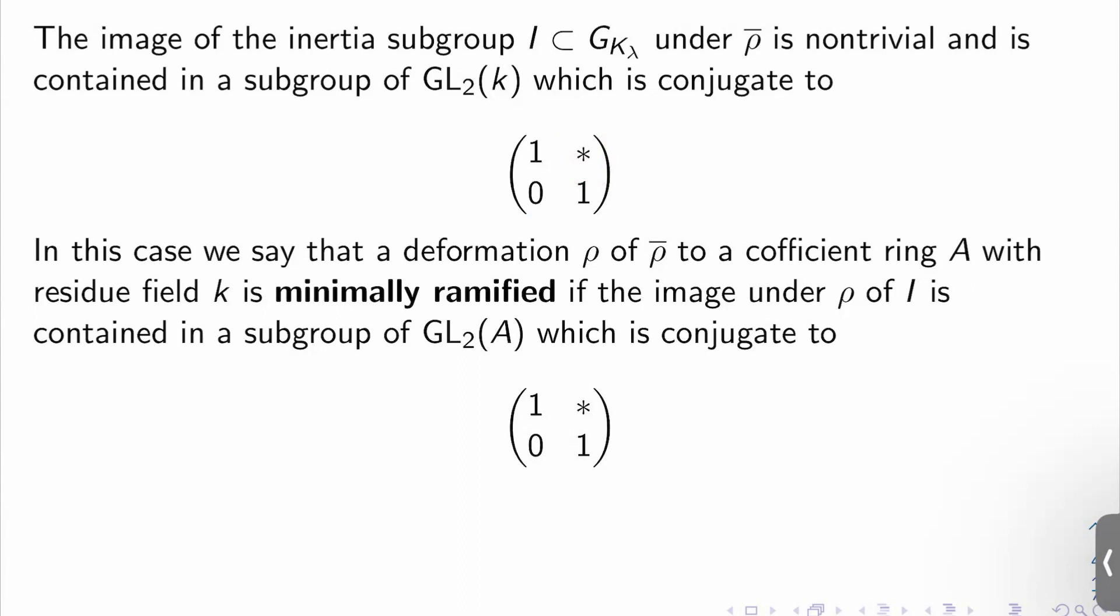And so to make that more precise, we'll say that a deformation rho of rho bar to a coefficient ring A with residue field K is minimally ramified if the image under rho of I is contained in a subgroup of GL_2 of A conjugate also to this kind of unipotent matrix group one star zero one.